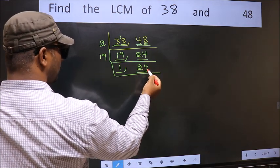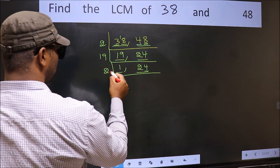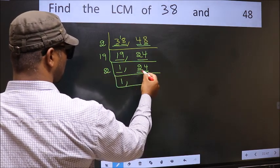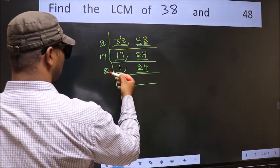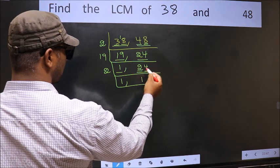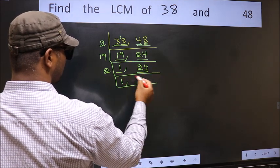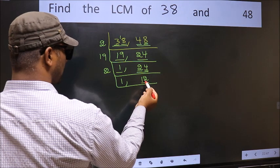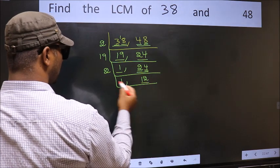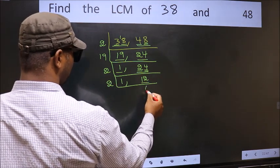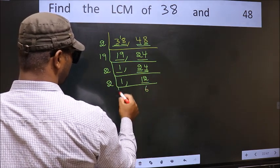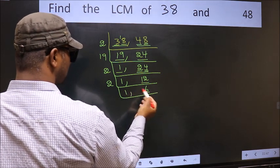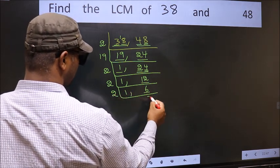For 24, the last digit is 4, so take 2. The first digit is 2 — 2 times 1 is 2. The other digit is 4 — 2 times 2 is 4. Now here we have 12. 12 in the 2 table: 2 times 6 is 12. Now here we have 6: 2 times 3 is 6.